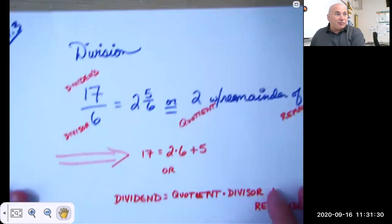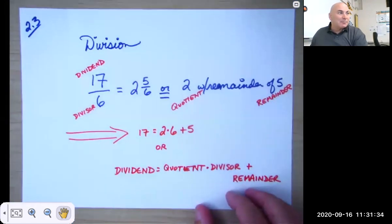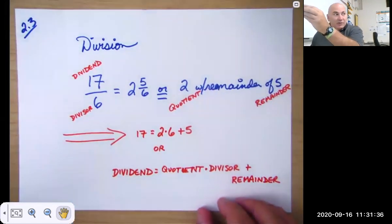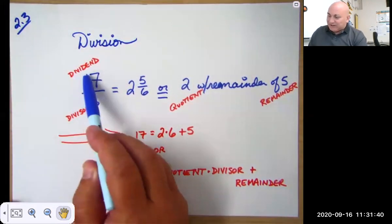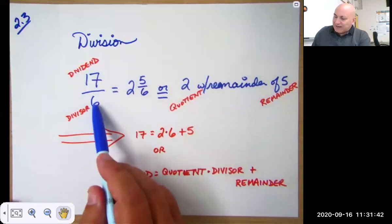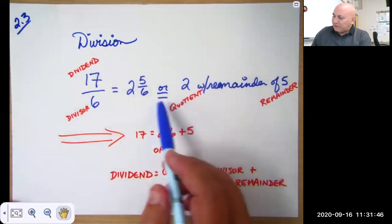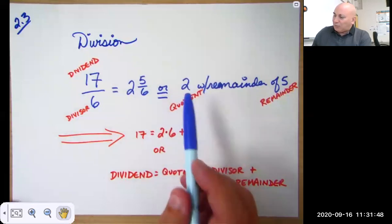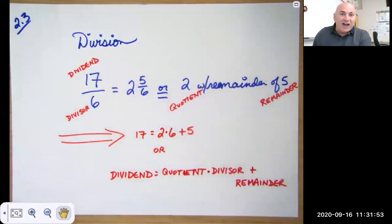So let's review division, which you've probably been doing since second grade. The number you're dividing into is the dividend and the number you're dividing by is the divisor. So we get two and five-sixths here, or we might say the quotient is two with a remainder of five.